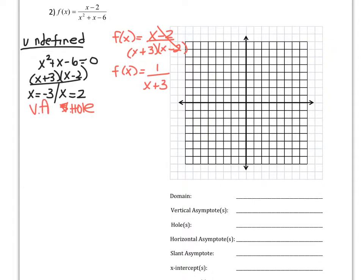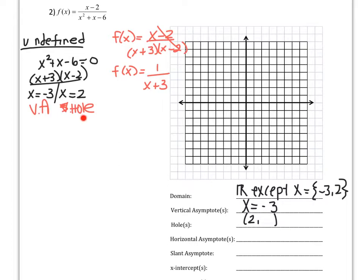So let's start answering some questions. The domain is all real numbers except for when x equals negative 3 and 2. The vertical asymptote is the line x equals negative 3. The hole is now a coordinate — (2, something) — so we need to find f of 2 using the simplified equation. That's 1 over 2 plus 3, so f of 2 is 1 fifth. So the hole is at (2, 1 fifth).